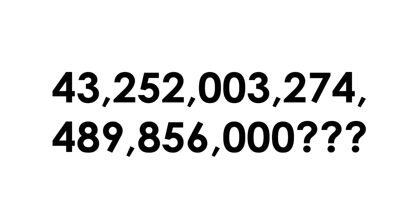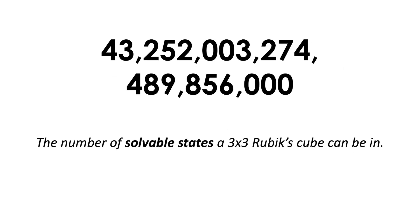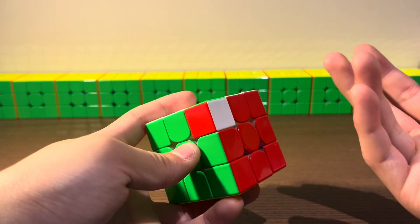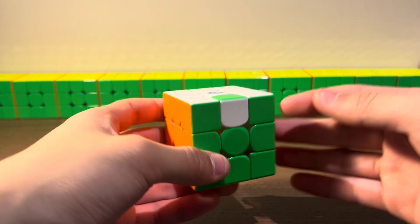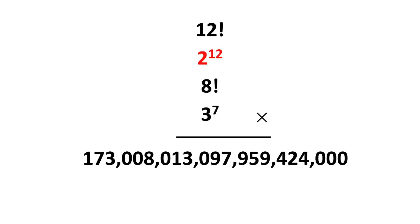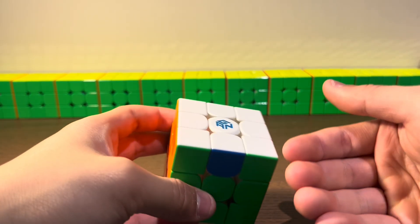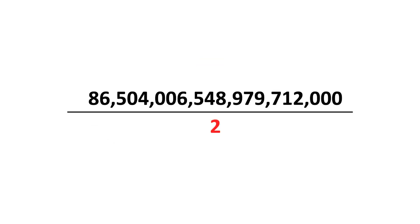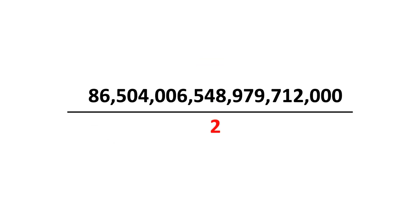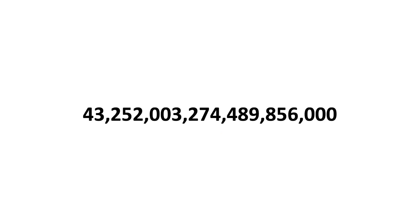So how do we get 43 quintillion? Well, 43 quintillion is the amount of solvable states. A single twisted corner is unsolvable, so instead of 3 to the power of 8, the last power doesn't count — giving us 3 to the power of 7 for corner orientations. The same goes for edges: it's 2 to the power of 11 instead of 2 to the power of 12. And finally, cases where two edges need to be swapped are impossible, so we divide by 2. Redoing the calculations gives us exactly 43 quintillion, 252 quadrillion, 3 trillion, 274 billion, 489 million, 856 thousand combinations.